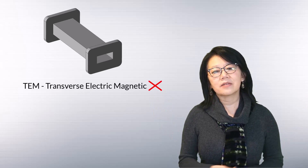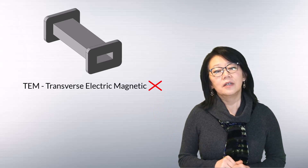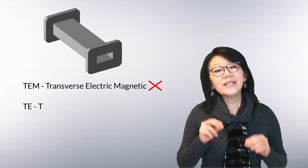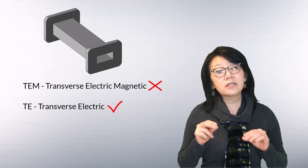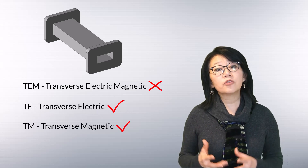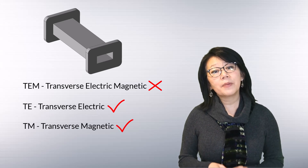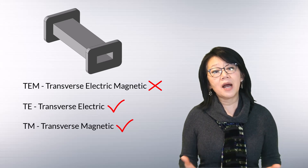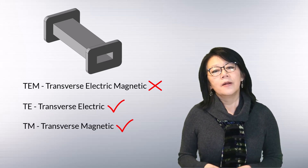As the rectangular waveguide is made up of just a single conductor, the TEM mode doesn't exist — it's not possible. So only TE (transverse electric) and TM (transverse magnetic) propagations are possible. Let's derive these modes.